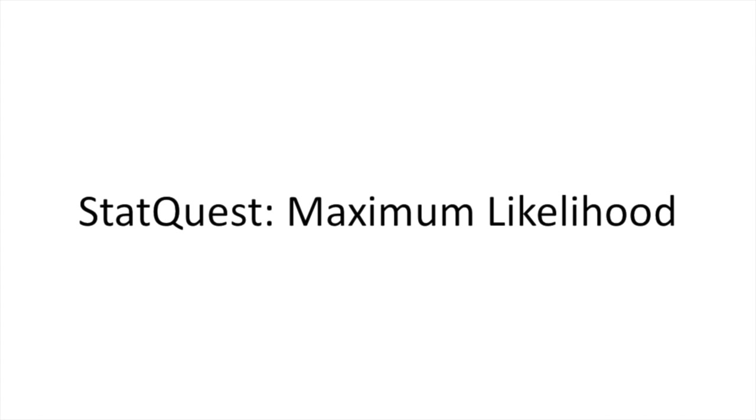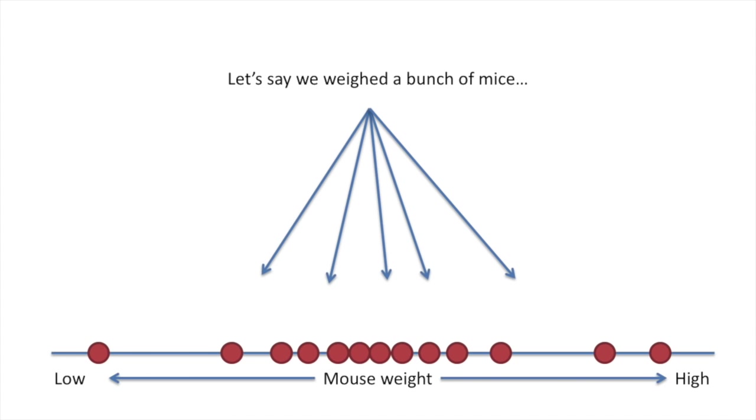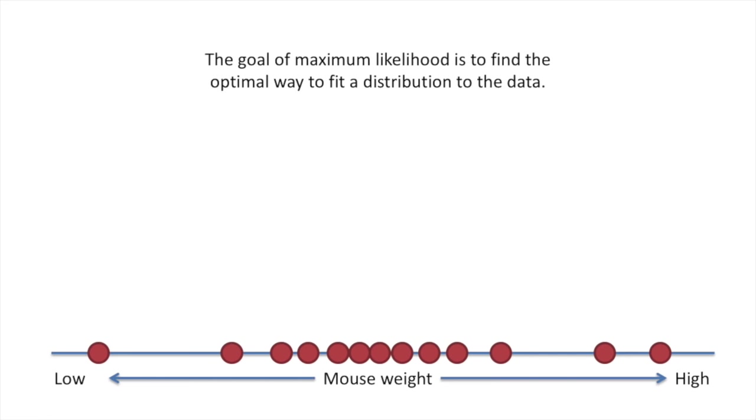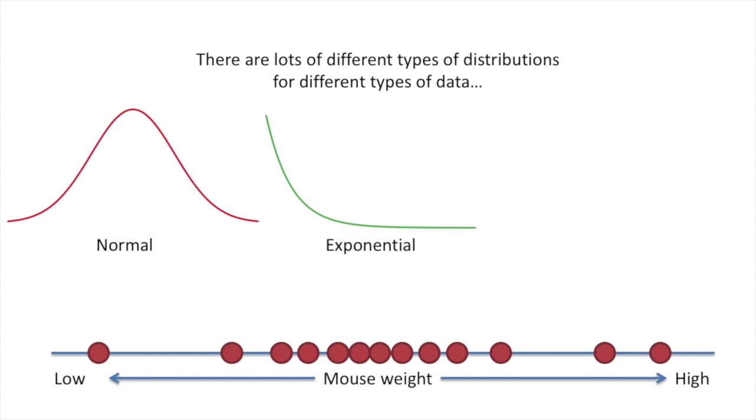Today we're going to be talking about maximum likelihood. Let's say we weighed a bunch of mice. The goal of maximum likelihood is to find the optimal way to fit a distribution to the data. There are lots of different types of distributions for different types of data. Here's a normal distribution. Here's what an exponential distribution looks like. And here's what a gamma distribution looks like. And there are many more.